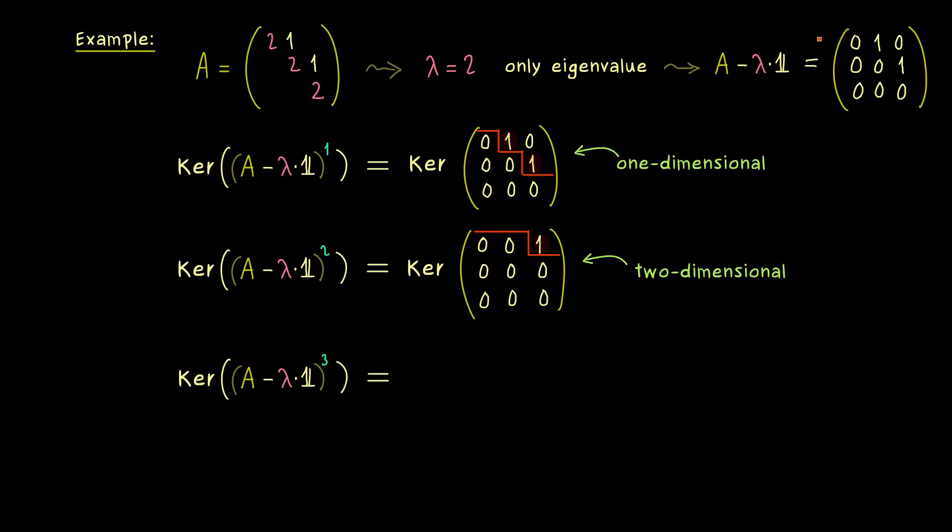And there we have our matrix three times in the matrix product. And calculating that gives us the zero matrix. And there it's immediately clear that our kernel is three dimensional. And of course we will stay at the zero matrix when we increase our power even more. So what we see here is that our chain from before is done after three steps. Because afterwards nothing changes anymore.